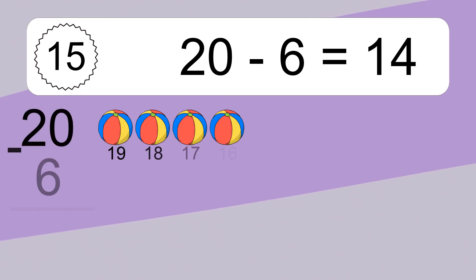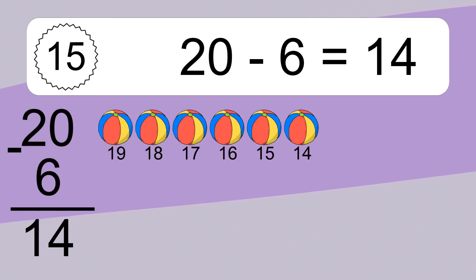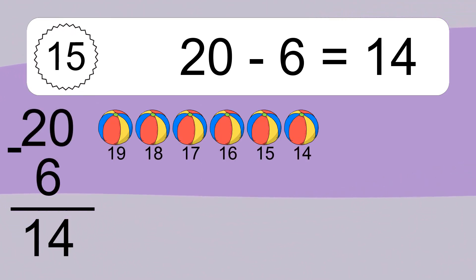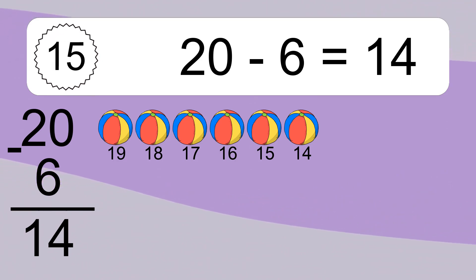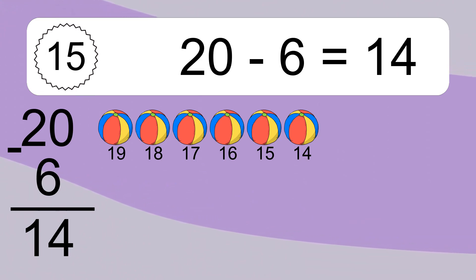20 minus 6 equals what? 20 minus 6 equals 14. Let's count it! 19, 18, 17, 16, 15, 14.